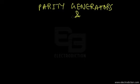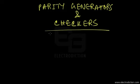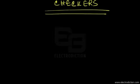Welcome to a tutorial on digital electronics. Today we're going to discuss parity generators and checkers, which are a means of basically detecting errors in case of digital transmission — certain errors in binary data transmitted in a digital transmission system.